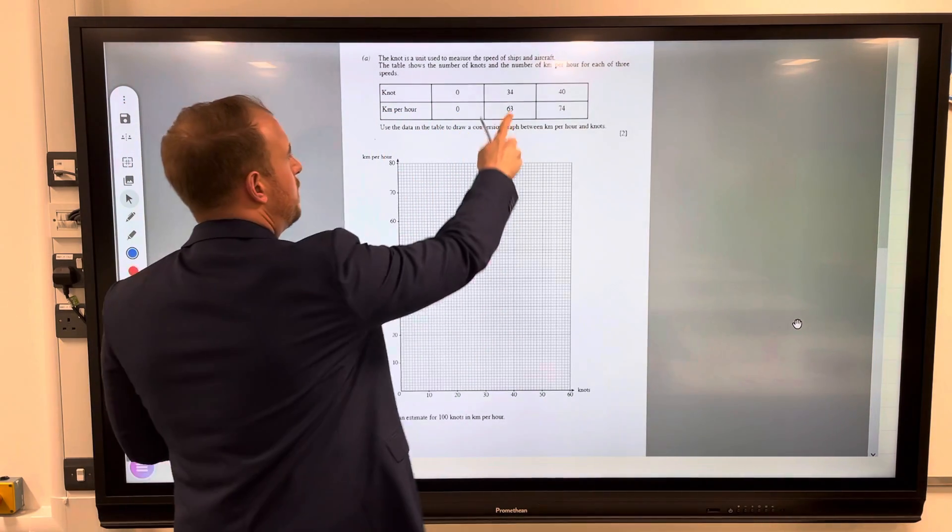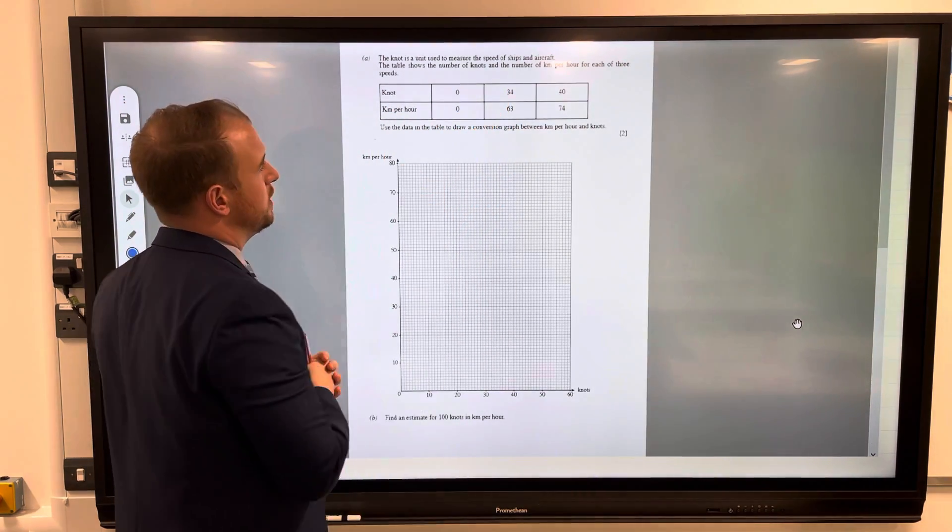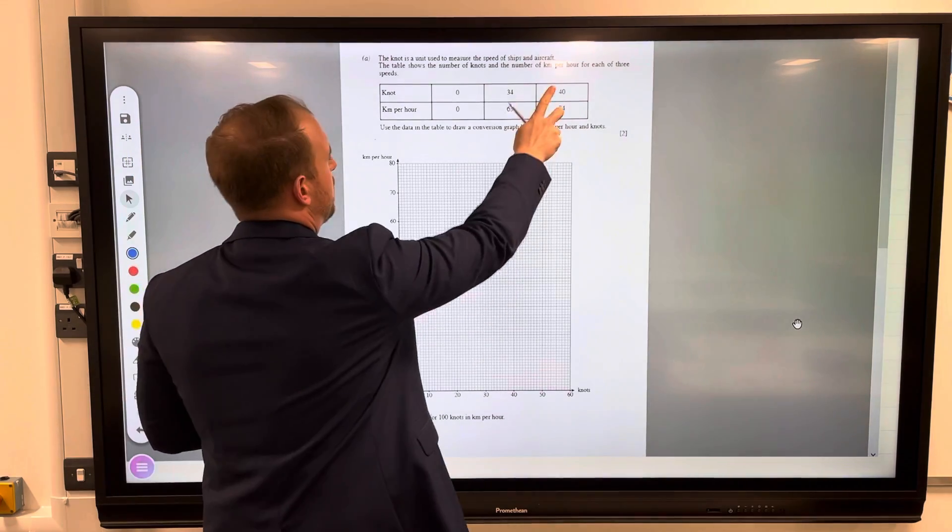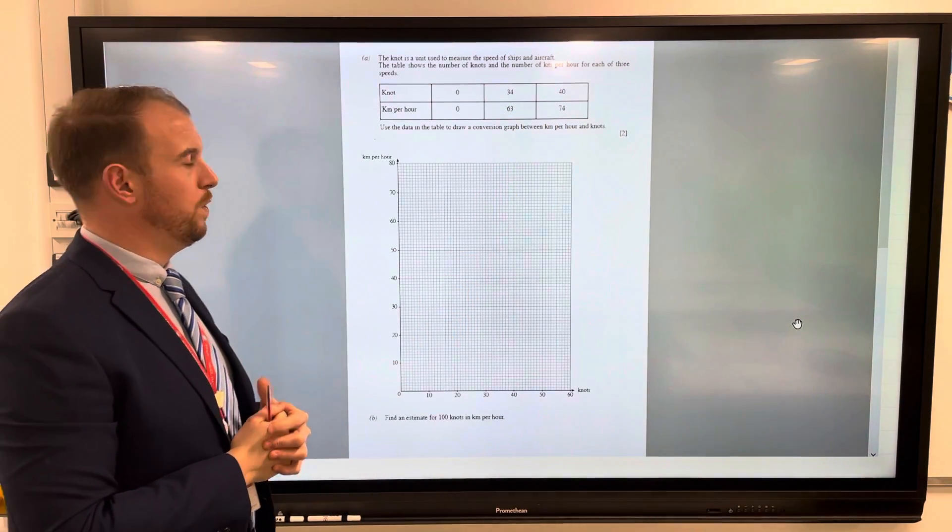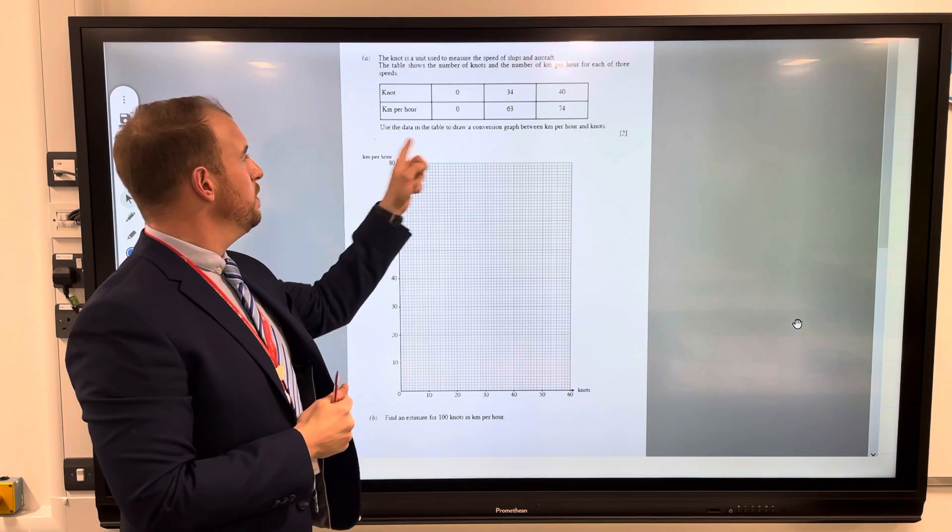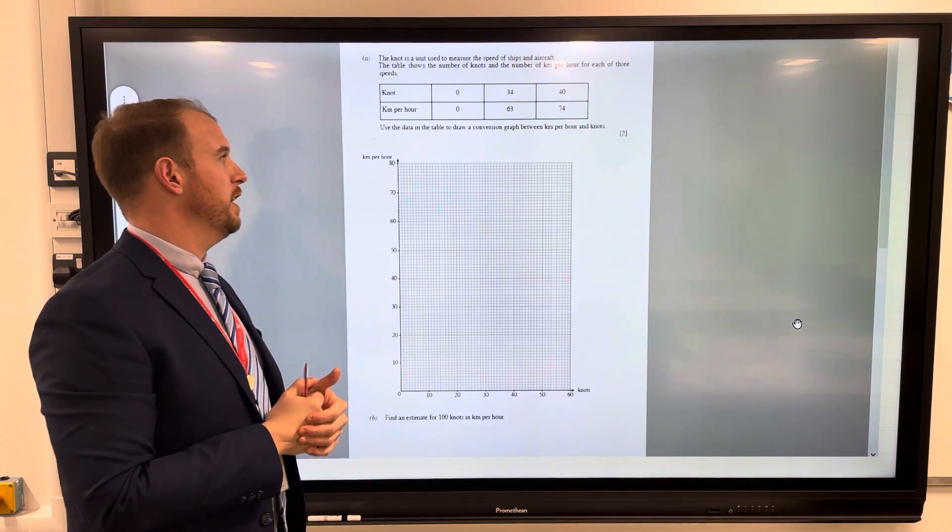As you can see, zero knots is zero kilometers per hour, 34 knots is 63 kilometers per hour, and 40 knots is 74 kilometers per hour. Use the data in the table to draw a conversion graph.